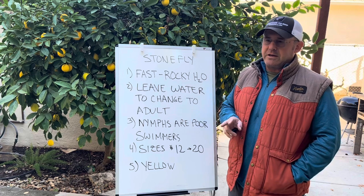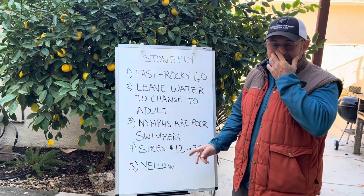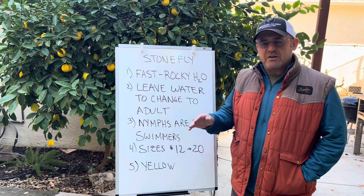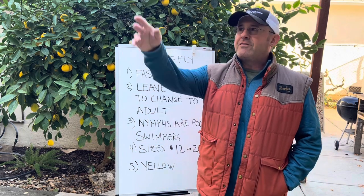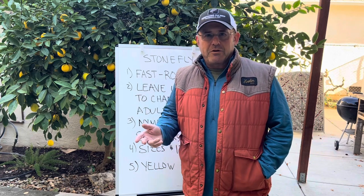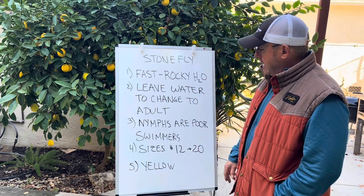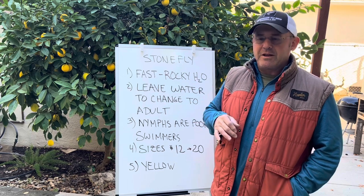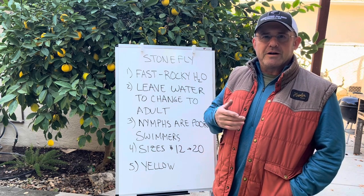Stonefly nymphs always have two tails, which is one way to tell them apart. Some stoneflies land on the water to lay eggs and actually run back across the surface and fly away, repeating that process — that's when you want to skitter your dry fly across the water a little bit to elicit a strike. So really there are only two stages where you can catch fish on stoneflies: when they're nymphs in the water, and when they come back to lay their eggs. Let's look at some photographs of stoneflies through their life cycle.